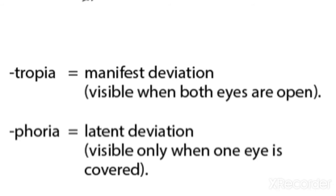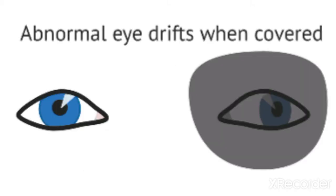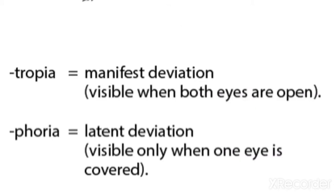Phoria means latent squint — it is hidden. So tropia is for manifest squint and phoria is for latent squint. You should know these different terms clearly: tropia is for the manifest and phoria is for the latent.